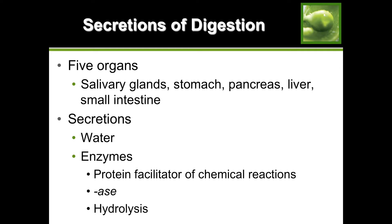Secretions of digestion: you have five organs that secrete digestive juices - your salivary glands, your stomach, your pancreas, your liver, and your small intestine. These secretions are mostly water and contain enzymes. Enzymes are proteins that facilitate chemical reactions - they facilitate the breaking down of macronutrients into smaller units.